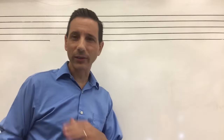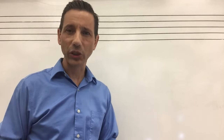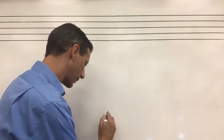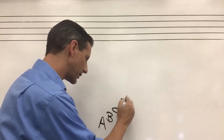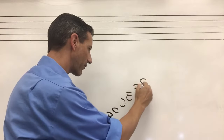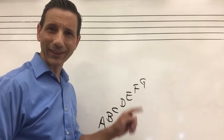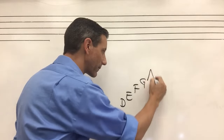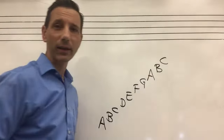Let's talk about the note names we use in music. We only use seven letters of the alphabet, A through G. So it goes like this: A, B, C, D, E, F, G. And once we get to G, we start over again with A, and then we go B, and so forth.